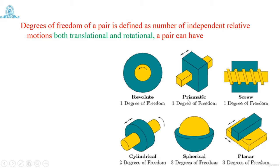Similarly, a prismatic pair — also known as a sliding pair — has a square hole through which a square rod is passed. It is not allowed to rotate; it is allowed to only slide. The independent relative motion here is translation motion, but only along the axis of the square rod. Translation perpendicular to that axis is not allowed. That is why it also has only one degree of freedom — translation.